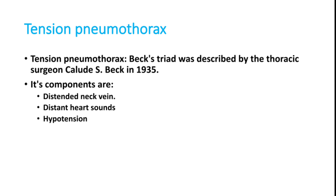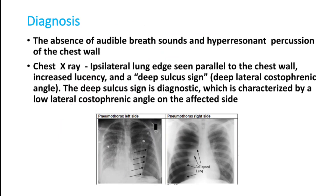In tension pneumothorax it is mostly a clinical diagnosis. If the patient is stable, take an X-ray in the emergency room. X-ray may show ipsilateral lung collapse with a line parallel to the chest wall, increased lucency, and the deep sulcus sign — a low lateral costophrenic angle on the affected side.